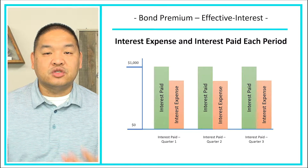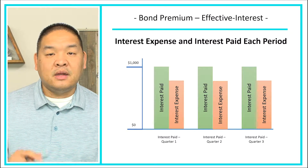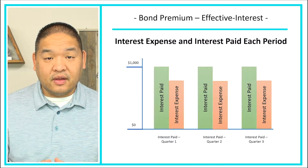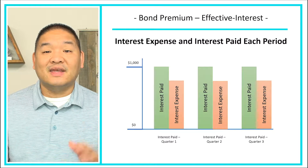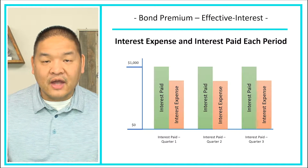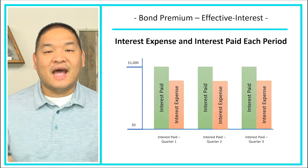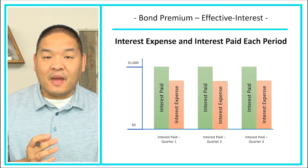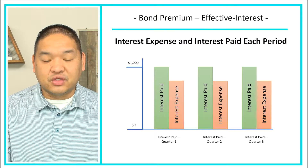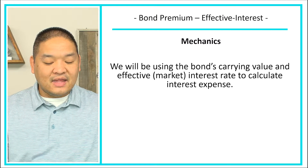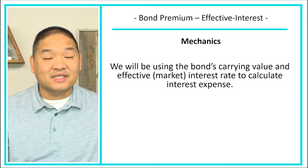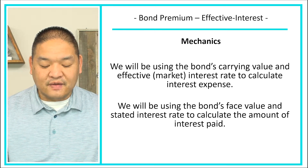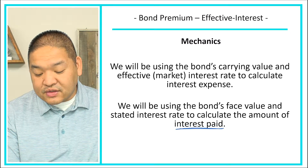At a high level, we're going to have interest paid, which is based on the face value of the bond and the stated interest rate — we multiply those two together to get the interest paid. Then we calculate the interest expense by taking the carrying value and multiplying it by the effective interest rate. The interest expense will be lower than the interest paid because we're taking some of the premium money received up front and paying it back to the bond holders. We use the bond's carrying value and effective interest rate for interest expense, and the bond's face value and stated interest rate for interest paid.